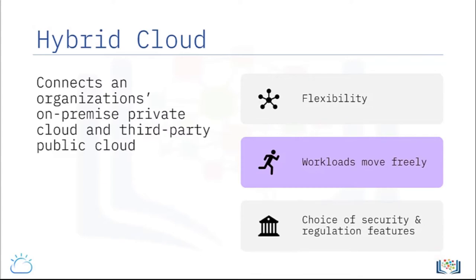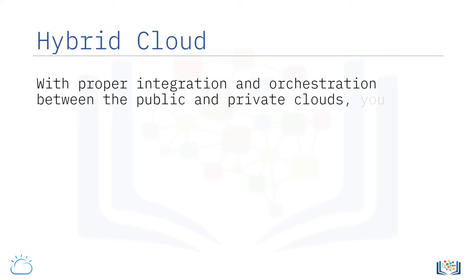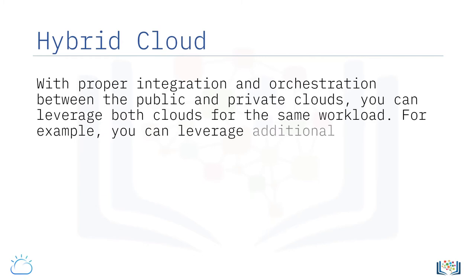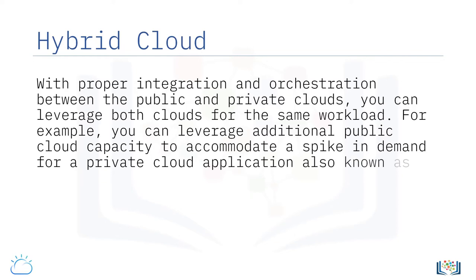Organizations can choose to run the sensitive, highly regulated, and mission-critical applications or workloads with reasonably constant performance and capacity requirements on private cloud infrastructure, while deploying the less sensitive and more dynamic workloads on the public cloud. With proper integration and orchestration between the public and private clouds, you can leverage both clouds for the same workload. For example, you can leverage additional public cloud capacity to accommodate a spike in demand for a private cloud application, also known as cloud bursting.